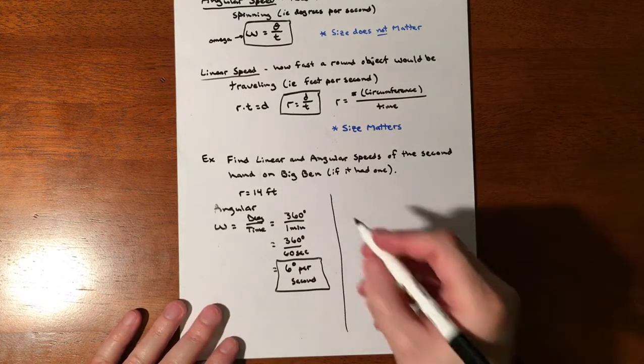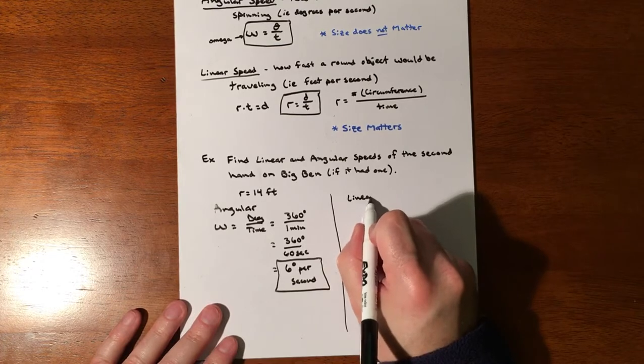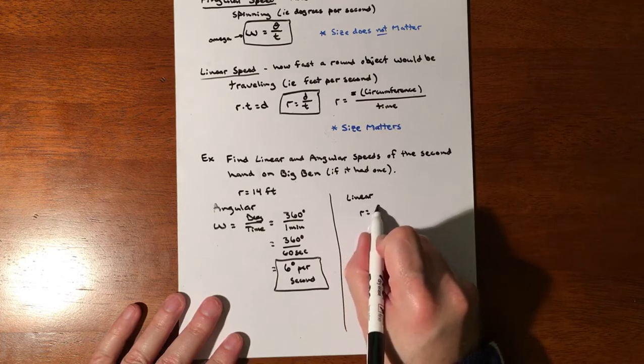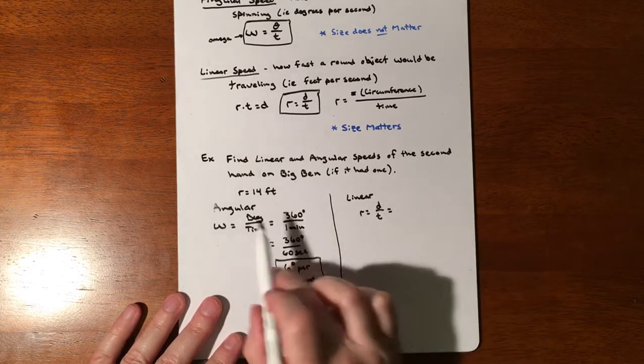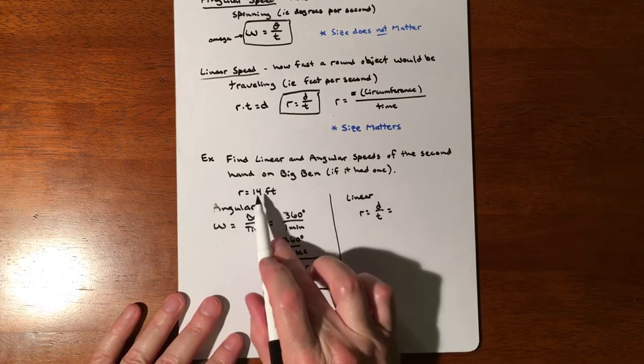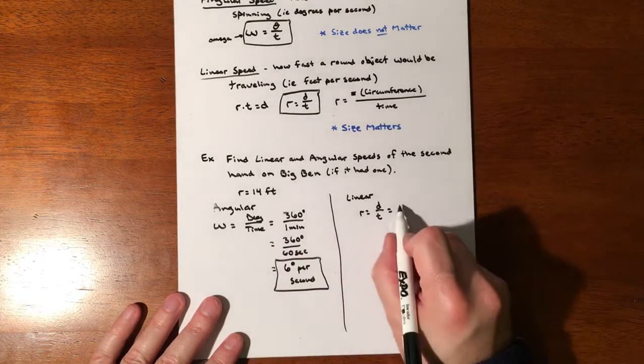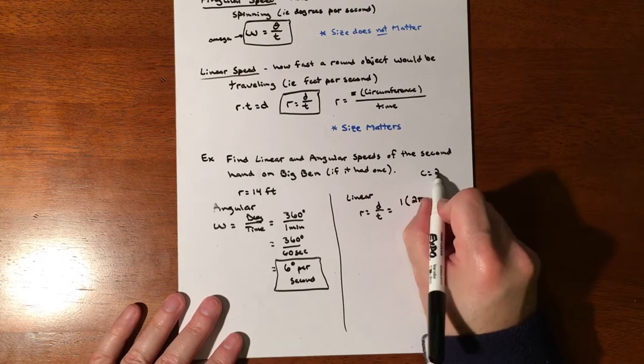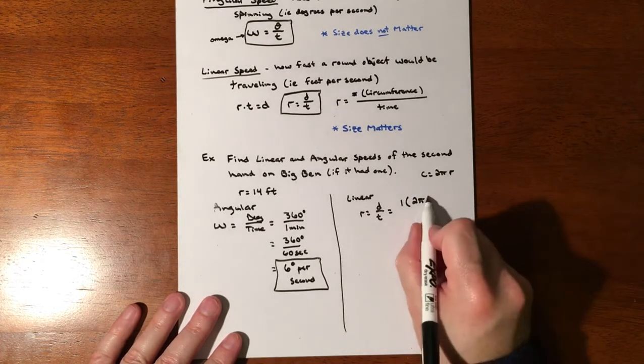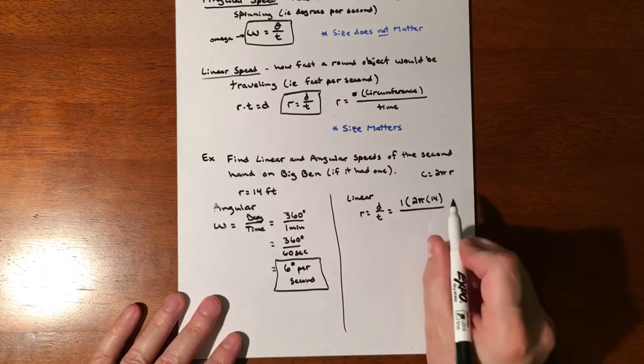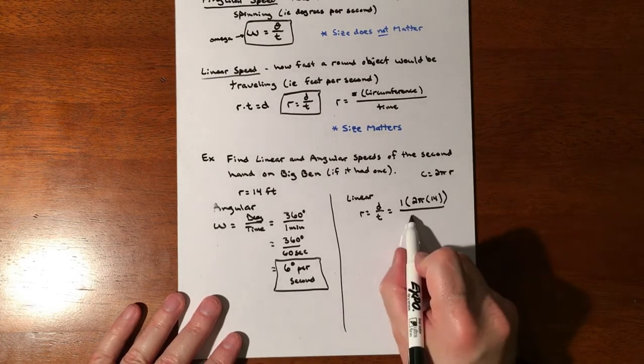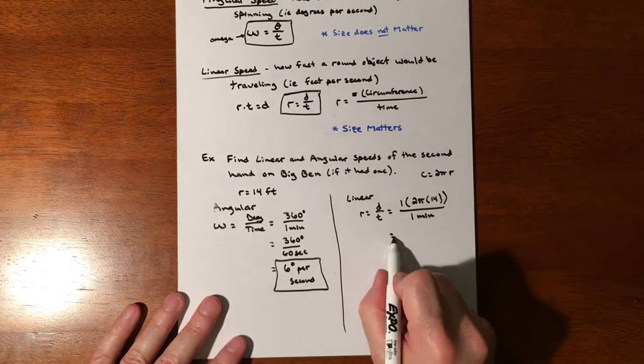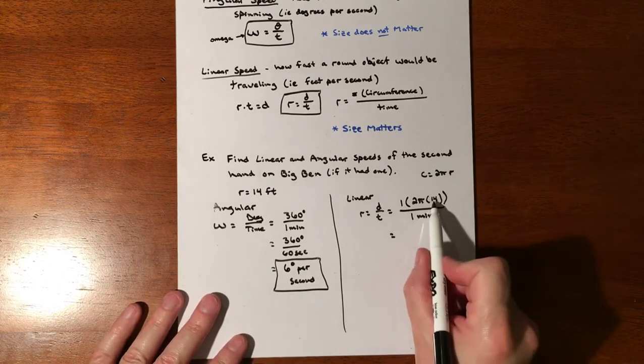However, linear speed - rate times time equals distance. If we have rate, it's going to be distance divided by time. Our distance is one time around, one circumference. We need our radius measurement, so it's one circumference, 2πr. If we divide that by time, one time around is one minute. We'll make it in seconds - that ends up being 28π feet in 60 seconds.